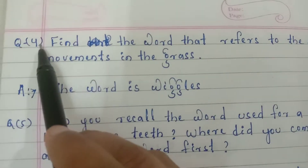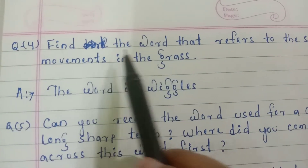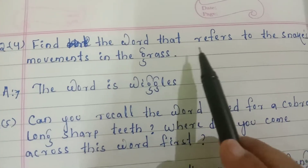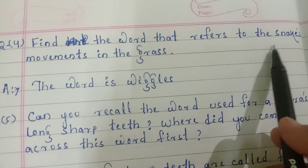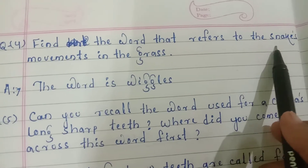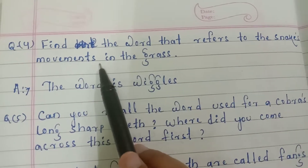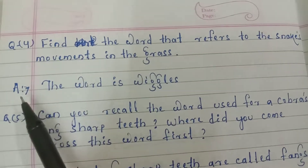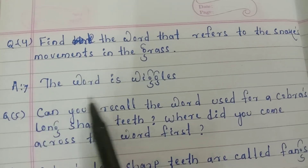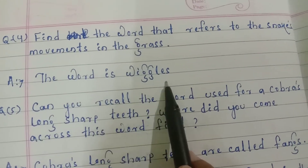Question number 4: Find the word that refers to the snake's movement in the grass. Answer: The word is wiggles.